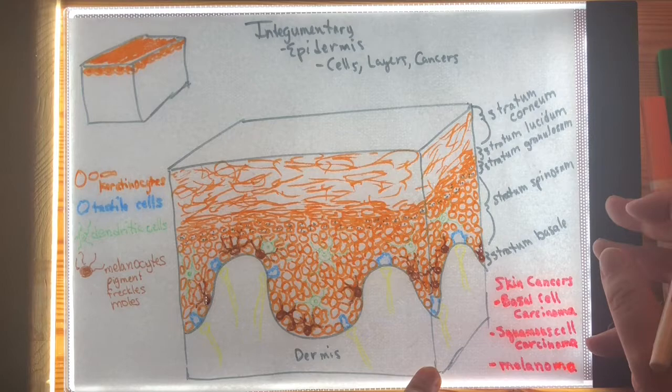With any cancer, the sooner we can catch it, the better off we are. This is especially true of melanoma — you want to catch it in the early stages so that it doesn't start to penetrate into the blood supply. If there is any possibility of metastasis or spreading to neighboring lymph nodes, chemotherapy and radiation are recommended.